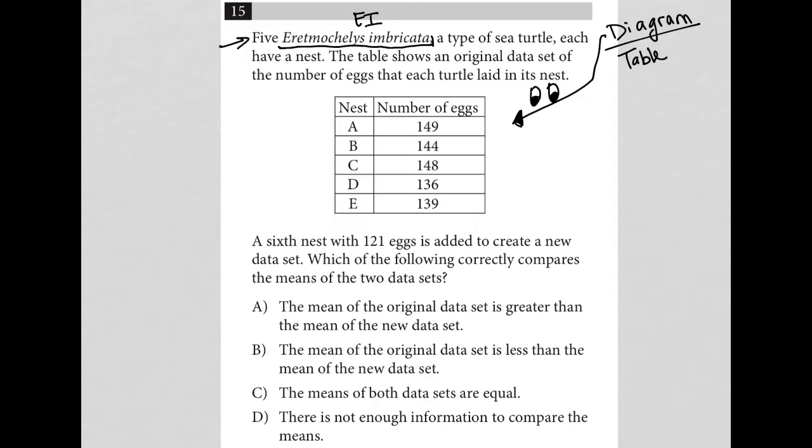The question goes on to say a sixth nest with 121 eggs is added to create a new data set. Okay, so that means we would have nest F and we'd have 121 over here for our new data set.